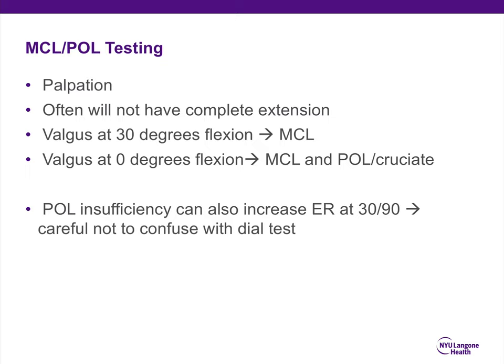When testing the MCL, palpate the knee — patients will have pain right over the medial epicondyle or distally. Testing at 30 degrees of flexion tests the MCL specifically. Testing at 0 degrees tests the MCL as well as the posterior oblique ligament and cruciate ligaments. Posterior oblique insufficiency can increase external rotation at 30 and 90 degrees, so be careful not to confuse this with a dial test. Often these patients will not have complete extension due to guarding or stiffness after the injury.